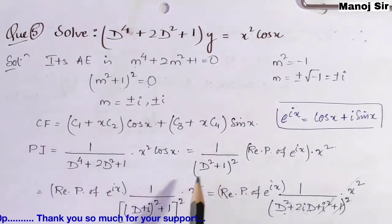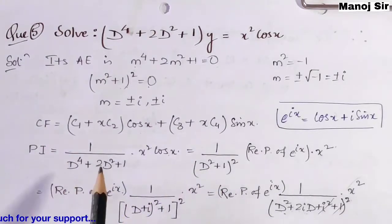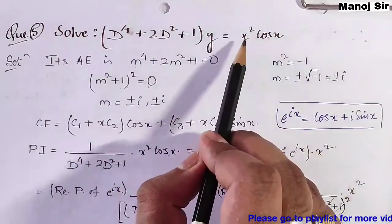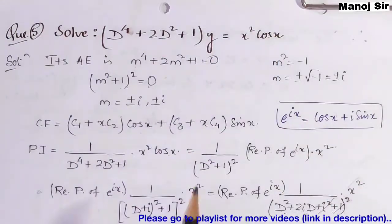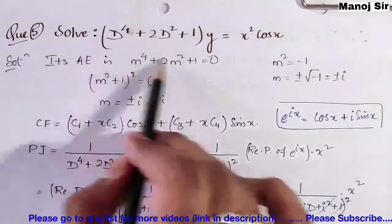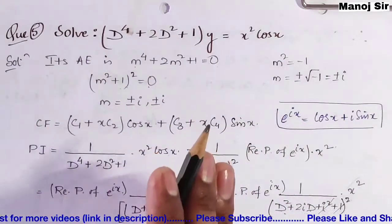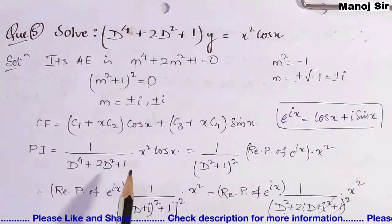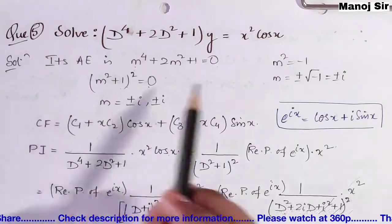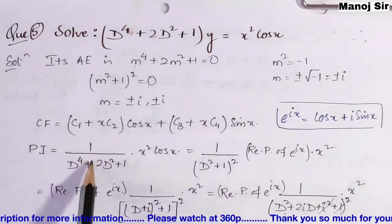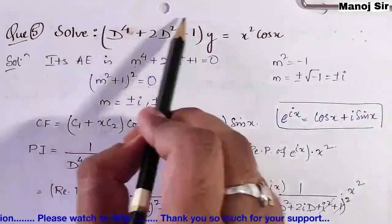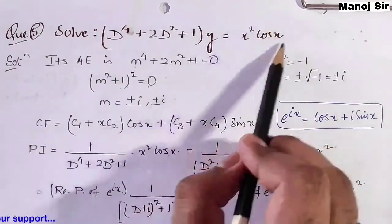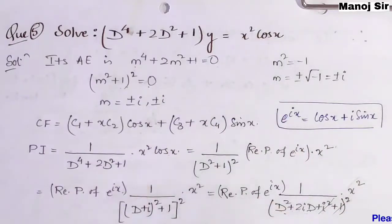Now we are interested in finding the PI, because we have a function of x on the right-hand side, namely x² cos x. To find the complete solution we need both the CF and the PI. So PI = 1/(D⁴ + 2D² + 1) · x² cos x = 1/(D² + 1)² · x² cos x.